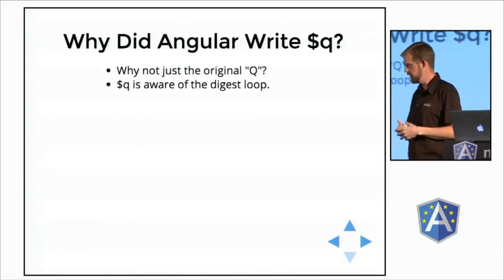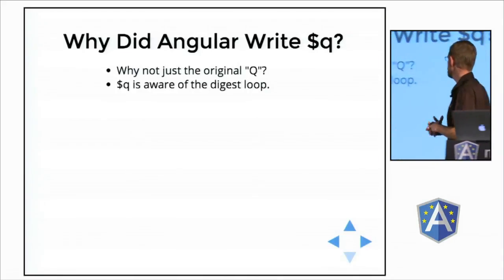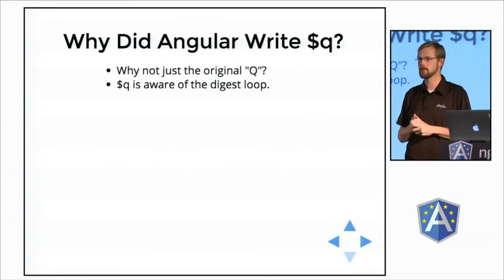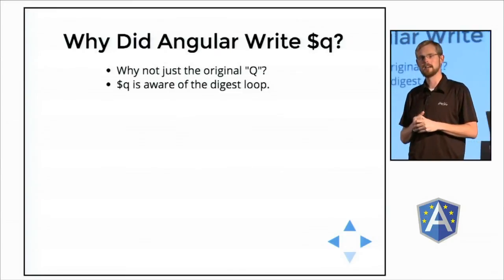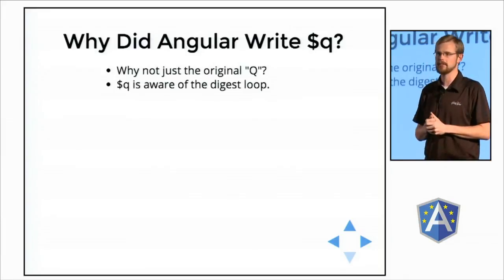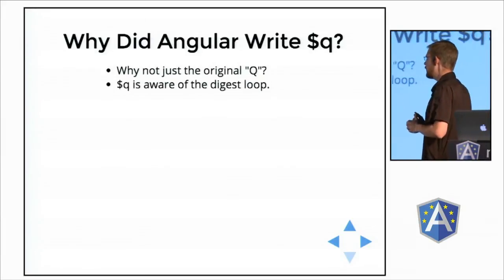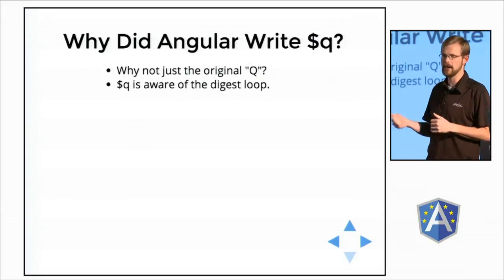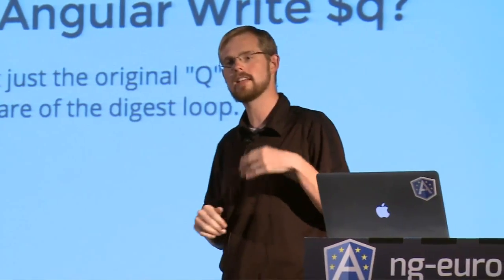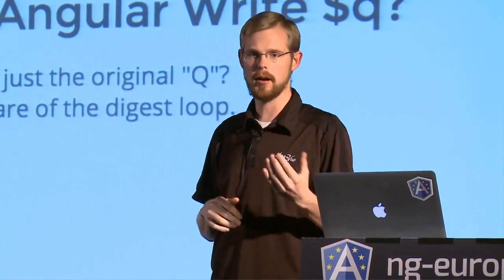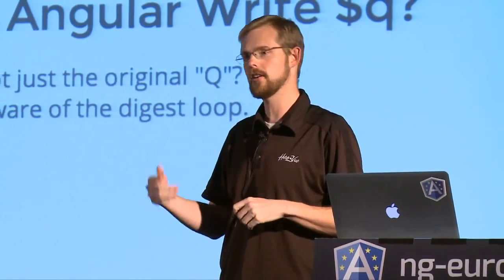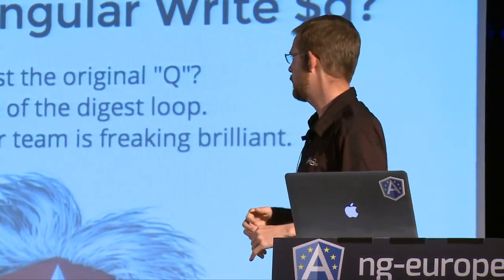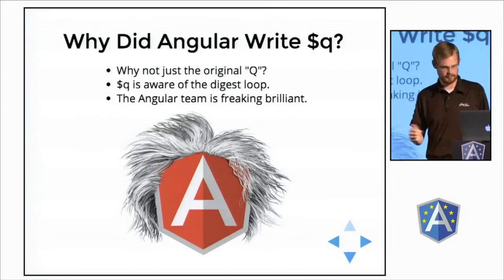Why did the Angular team even do this? There already was a Q library — capital Q — created by Kris Kowal, in wide use and well recognized. The main reason is that the queue service is aware of the digest loop — it depends on it. When you resolve a $q deferred object, it won't actually call the promises until the next digest loop. And the third reason is that basically the Angular team is a bunch of freaking geniuses.